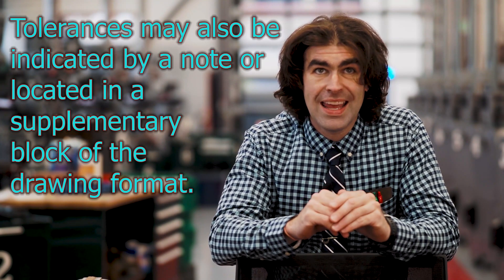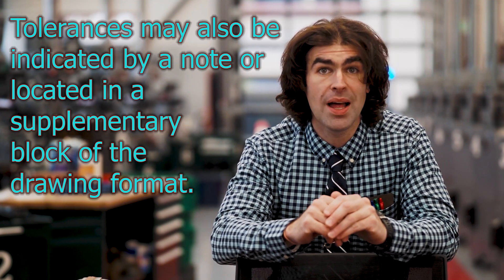So let's move on to sentence four. Tolerances may also be indicated by a note or located in a supplementary block of the drawing format. So explanation. Again, may means this is an option among other things. So we have first, tolerances applied directly to a size dimension. Second, tolerances applied with basic dimensions and feature control frames. And now third, we have the note or title block option to apply a tolerance to a dimension. So supplementary block means near the title block or part of the drawing format. Somewhere on the face of a drawing. It's normally in the title block type area. Every company does it a little bit differently.